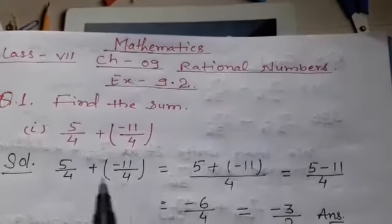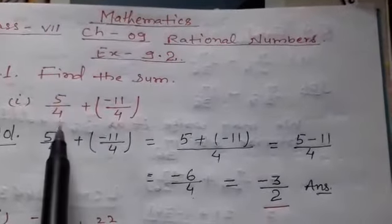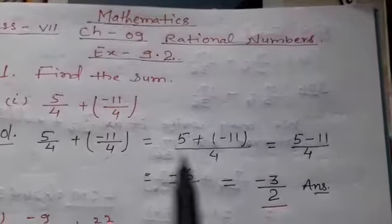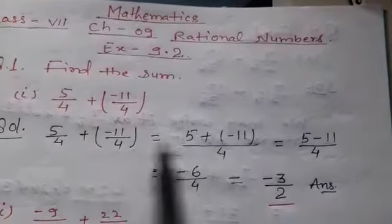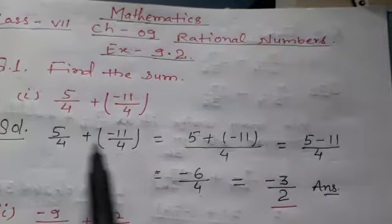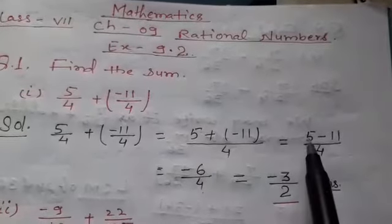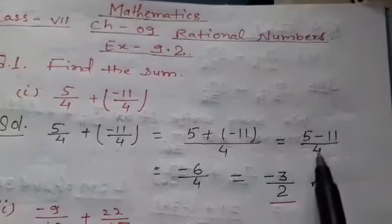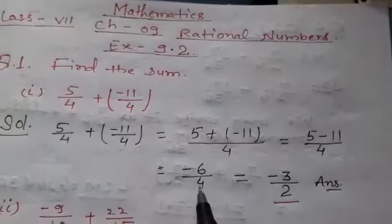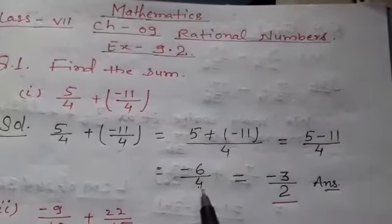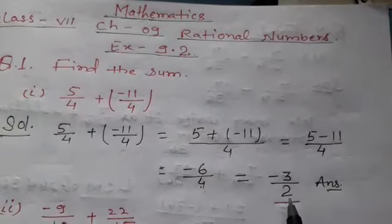We write it. Now we find the LCM of the denominators, which is 4. So we write: 5 + (−11) = 5 − 11 by 4, which equals −6/4. When we reduce it, we find −3/2.